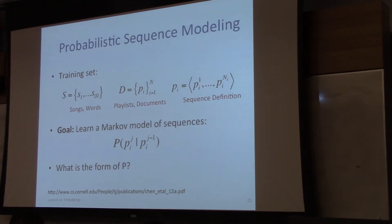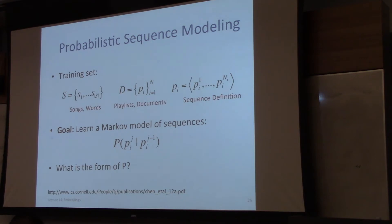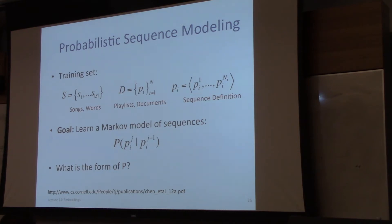Let capital S denote your ground set of song IDs or word IDs. Capital D is your training set of playlists, documents, or sentences. Each entry in D is a sequence, and each entry in the sequence corresponds to one of your items. A simple goal is to learn a Markov model over sequences — very similar to the HMM problem.